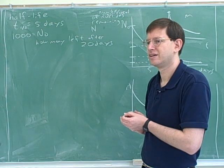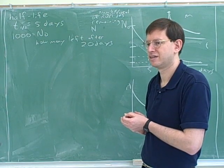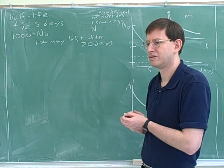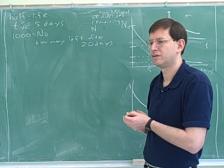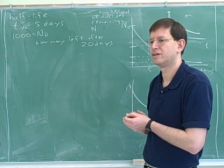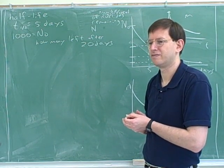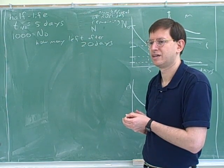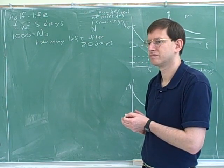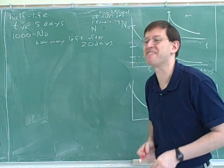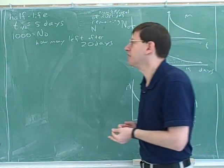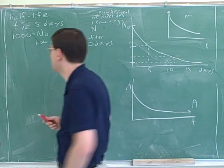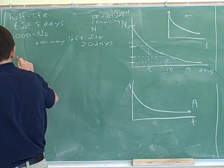So then we'll do half of that — 250 at 10 days. Then 125 at 15 days. And 75 at 20 days. We didn't have to do it together — you figured it out. Very good. Let me show you how to be organized about that. When you're doing half-life problems, it's good to draw a table.